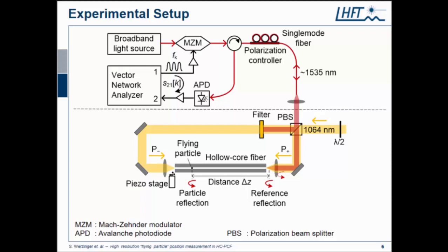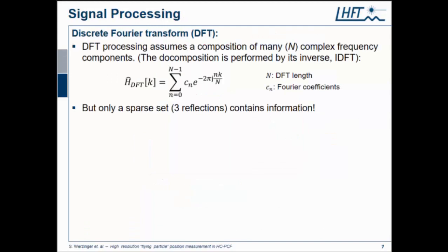This here is the hollow-core fiber we used in the experiment, and we can use a piezo stage to drop these particles into the beam path and then they will get trapped there. We also get a reflection from this particle here, which is captured by our setup. We also used a reference reflection at the beginning of the fiber to reference the position of the particle to this reflection.